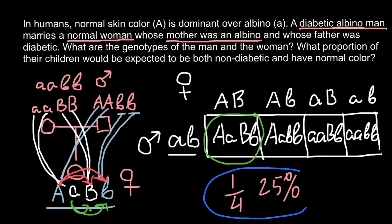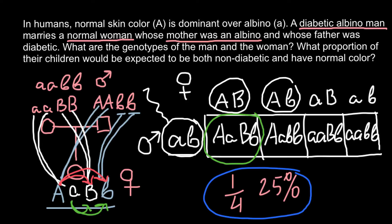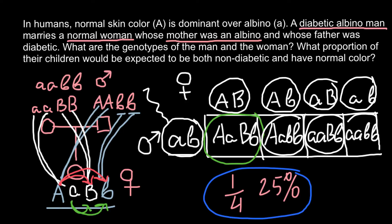One more note: the gametes produced by the male are sperm, and the gametes produced by the female are egg cells — both types of gametes are haploid. When these two gametes merge, they produce a diploid organism. The genotypes and phenotypes we derived are those of the resulting diploid offspring.